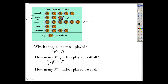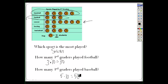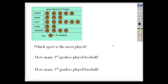How many third graders played baseball? I go to the baseball column — there are five pictures. Each one is worth 10, so five times 10 equals 50 third graders playing baseball: 10, 20, 30, 40, 50. Okay, so that's how you read a pictograph.